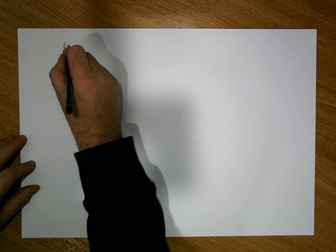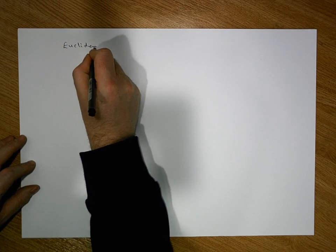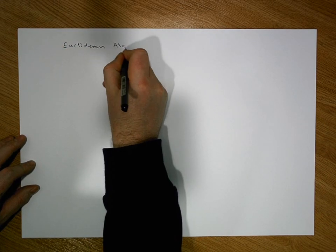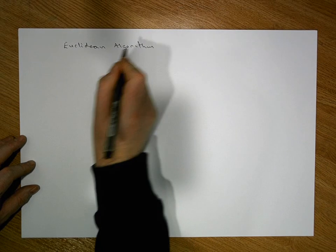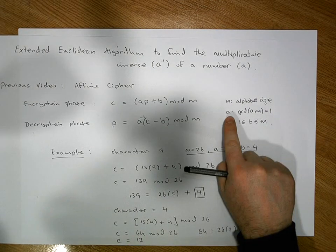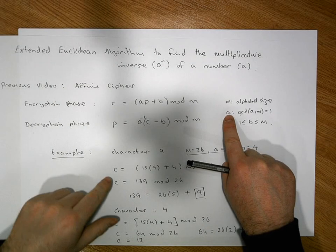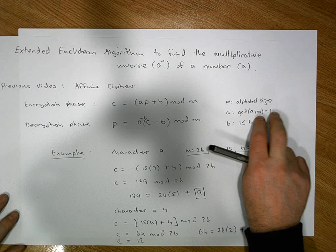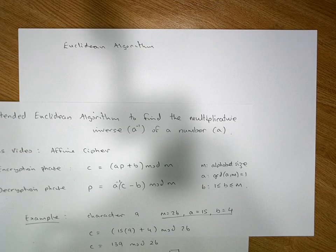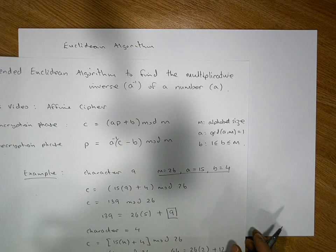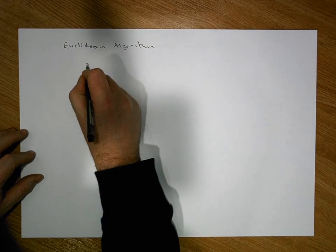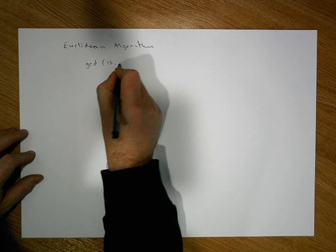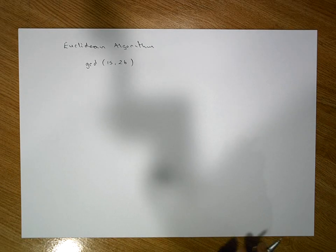Let's apply the Euclidean algorithm. From the affine cipher perspective, a and m must satisfy gcd(a, m) = 1. Let's verify that the greatest common divisor of 15 and 26 is indeed equal to 1.